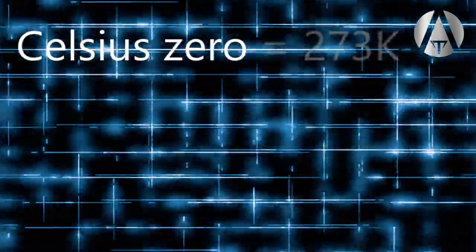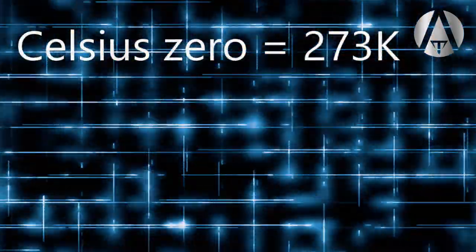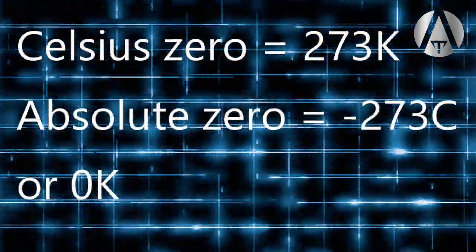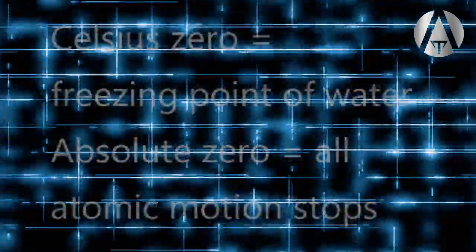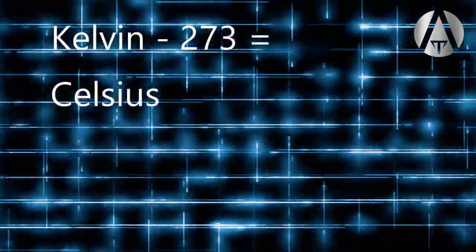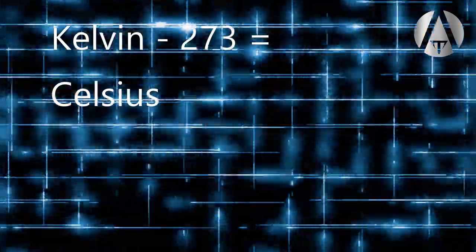Kelvin uses the same scale, but it starts at absolute zero, which would be minus 273.15 Celsius. Normally we want to do everything in Kelvin, but as we get close to room temperature, converting to something more familiar can help us understand. So subtract 273 from any Kelvin reading to get a good Celsius approximation.